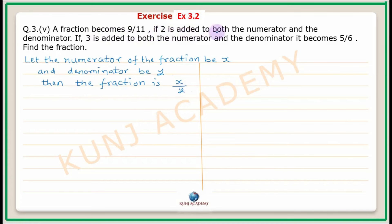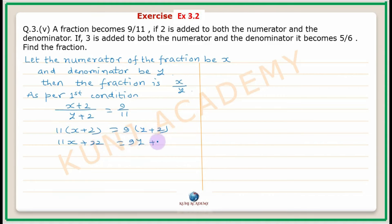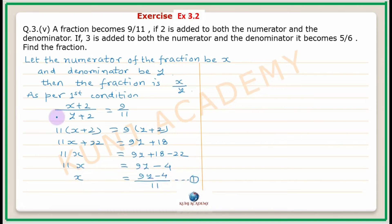As per the first condition, if 2 is added to both the numerator and the denominator, the fraction becomes 9 upon 11. By cross multiplication: 11 into x plus 2 equals 9 into y plus 2, giving 11x plus 22 equals 9y plus 18.